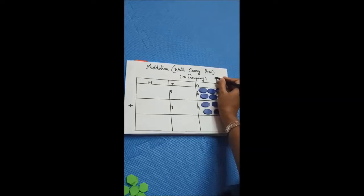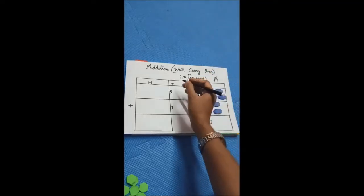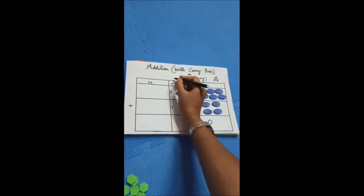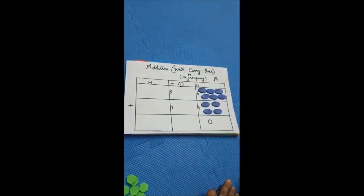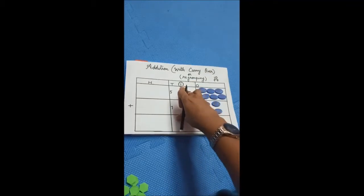Here we got a two-digit number, so this is ones and this is tens. The ones place number we have to write here, and the tens place number we have to carry over to the next place value. We got 10, so we write 0 here and carry 1 to the next place value.